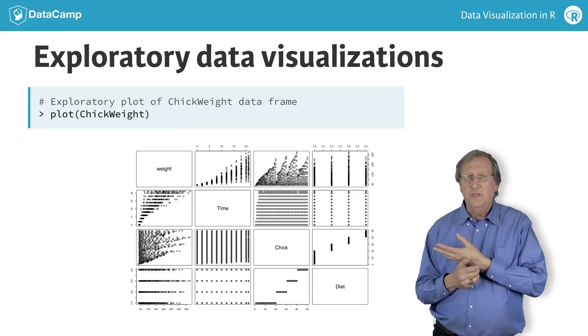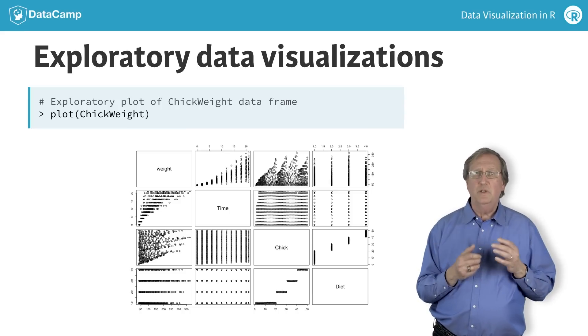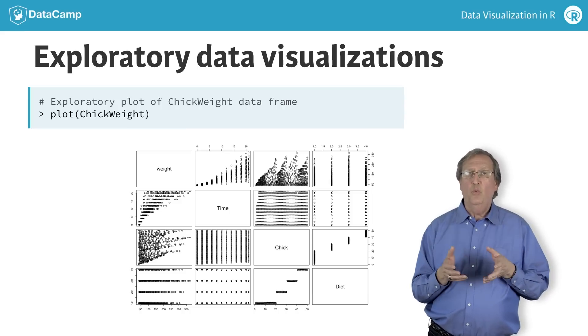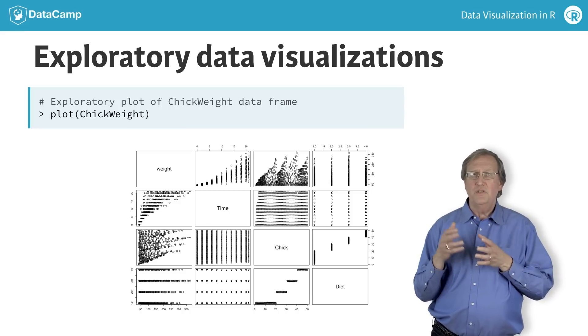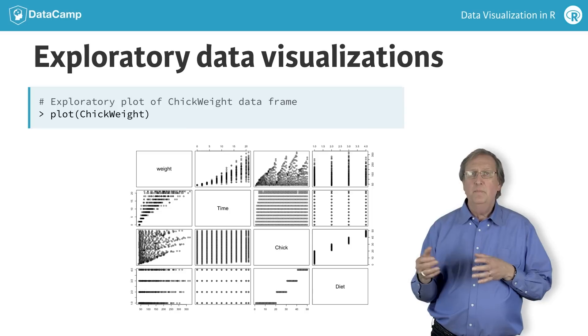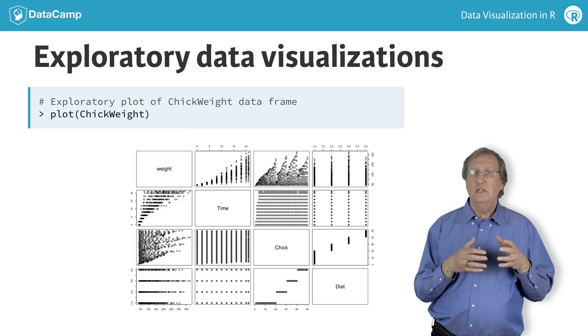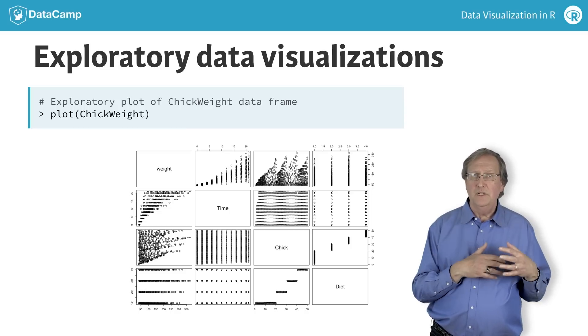From these plots, we can see, for example, that weight varies systematically with time, and that the chicks were assigned to four different diets.